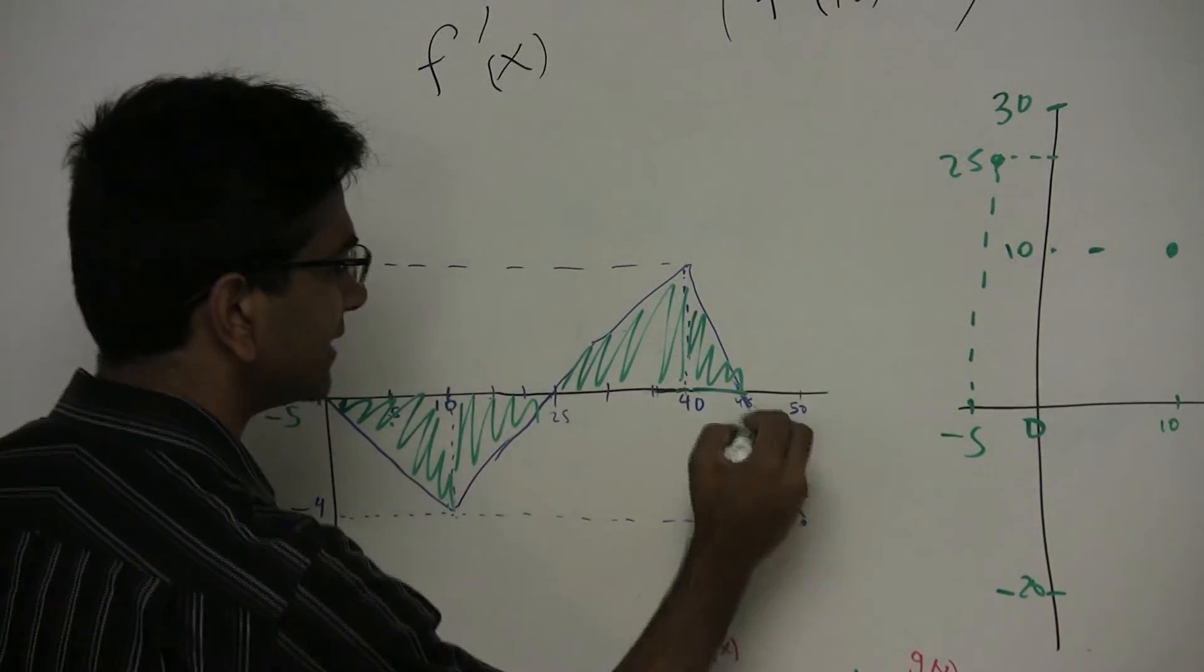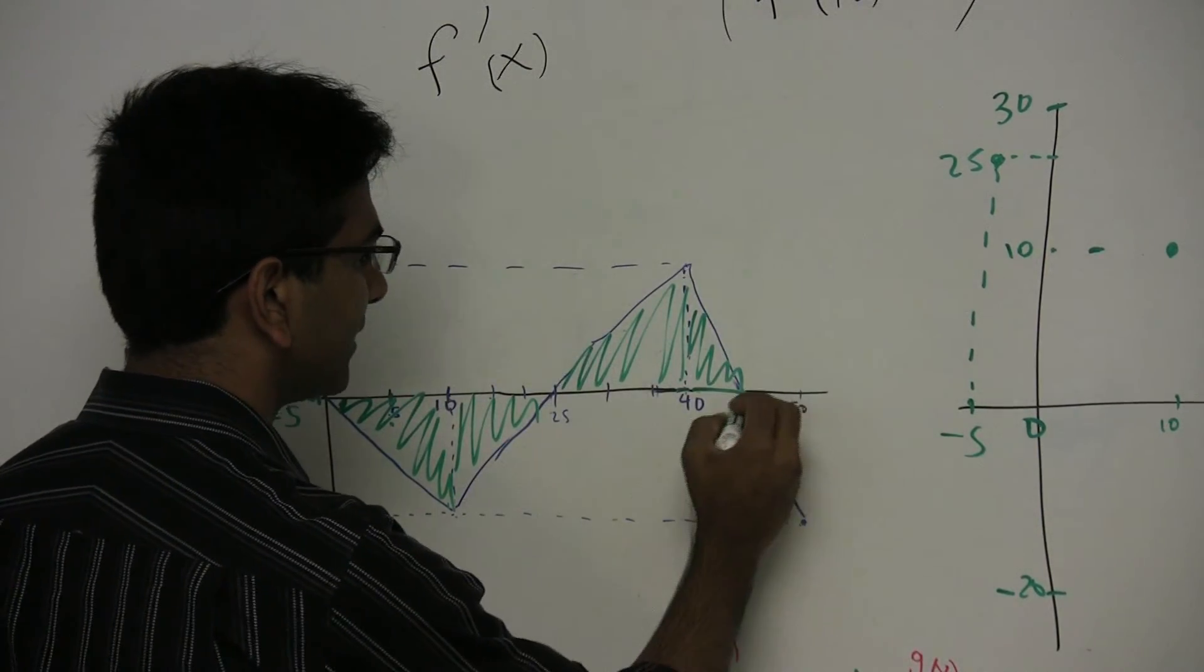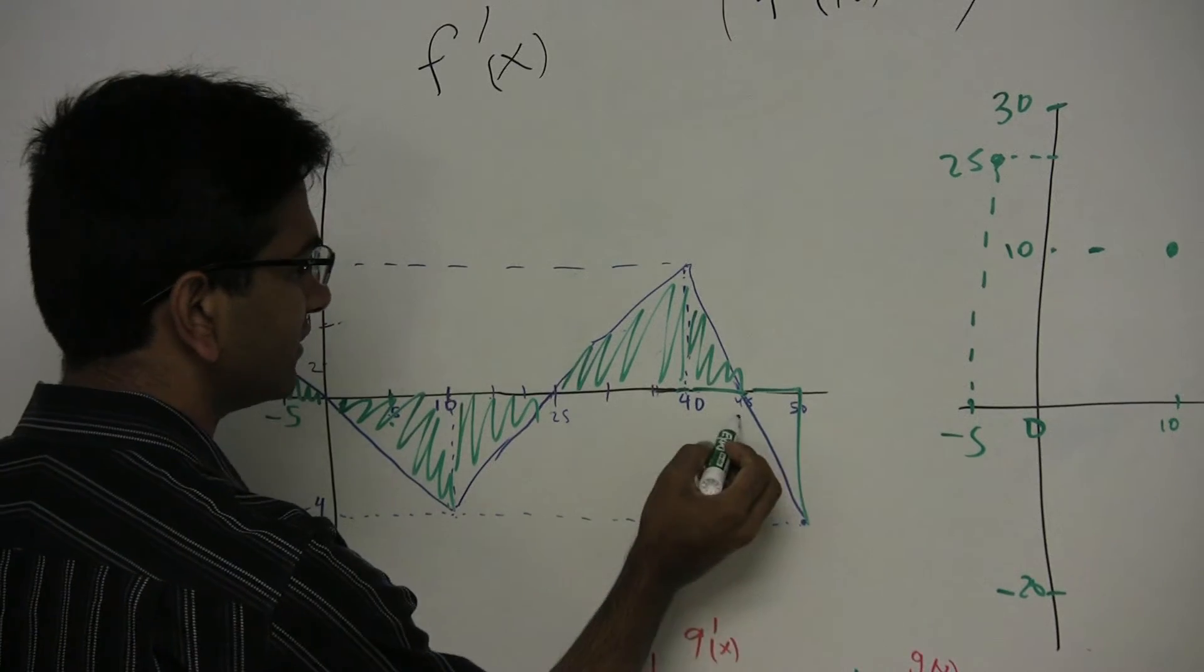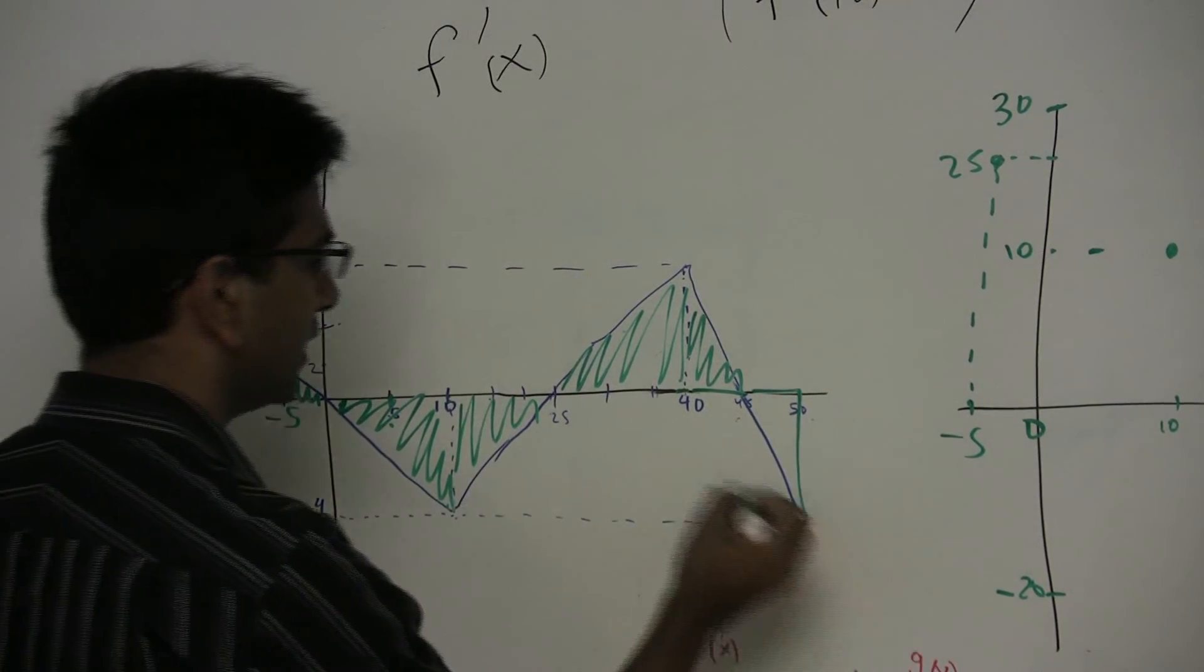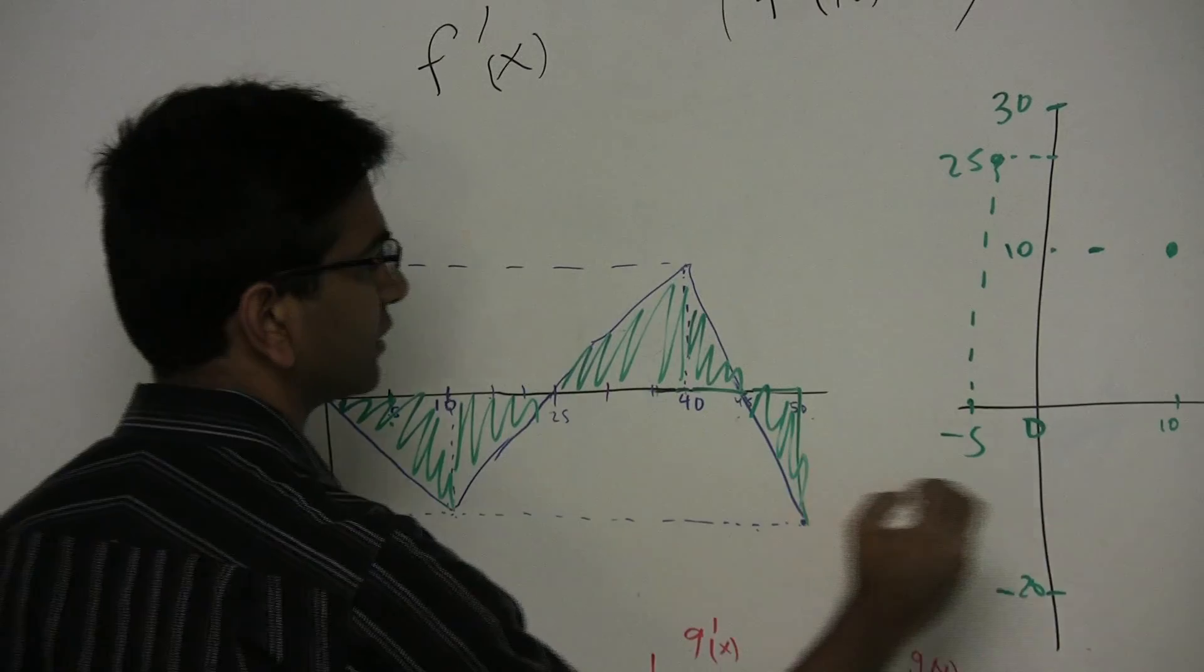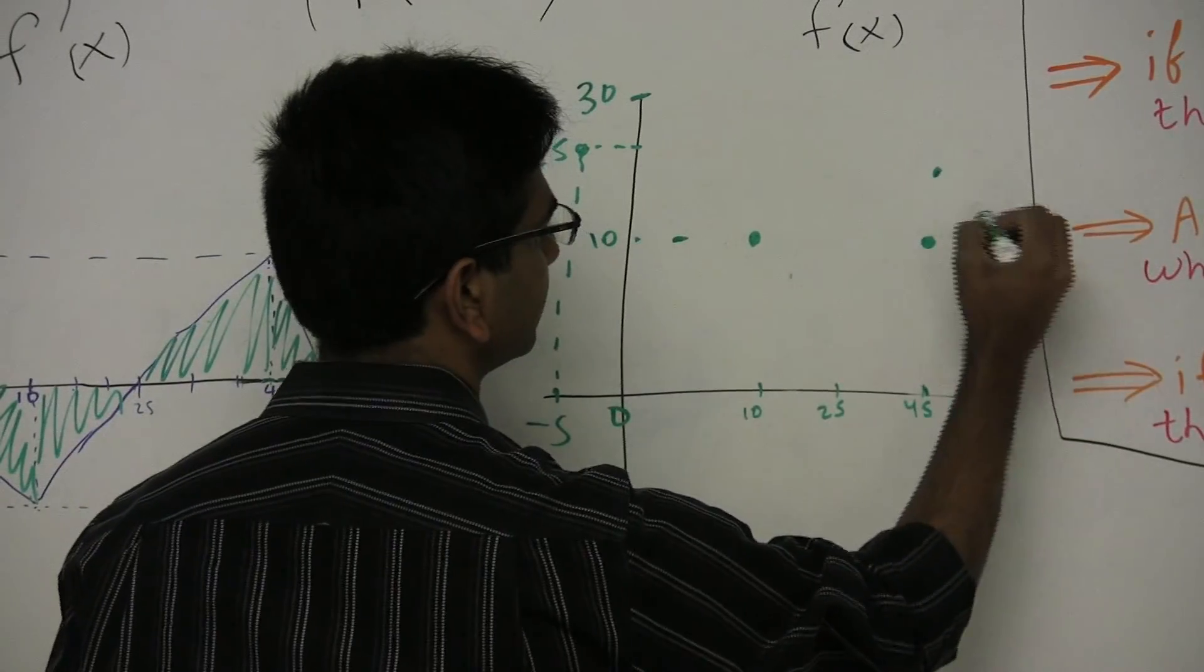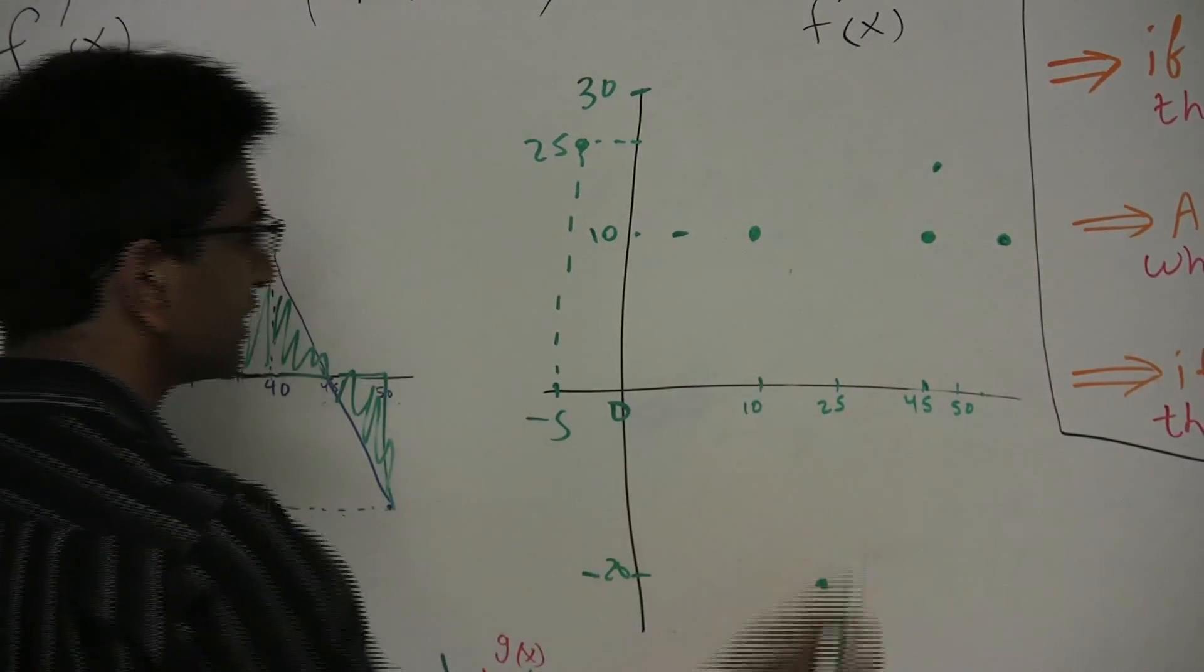And then it will do the exact same thing between 45 and 50, because this area also happens to be, as you can see, 5 times 4, divided by 2, which is 10. So it will go down by 10 again, over here.